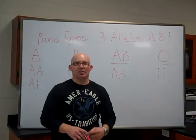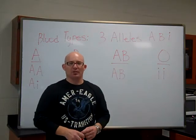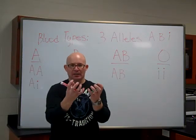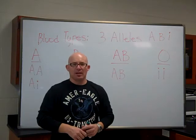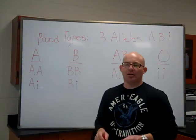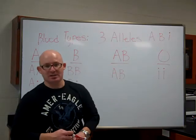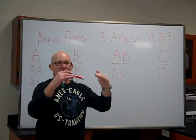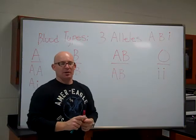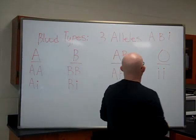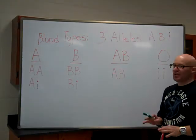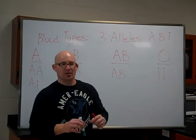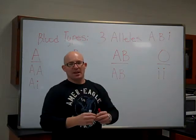Co-dominance is just like if you're called to be the co-captain of the football team or the co-chairperson of an activity — you are equally the captain. In this case, we have a couple of alleles of the blood type genes that are equally dominant. One's not dominant over the other; they are equal at the top. When we look at the blood typing genes, we're not going to talk about who can give blood to whom — we're just going to talk about how we determine the genetics.